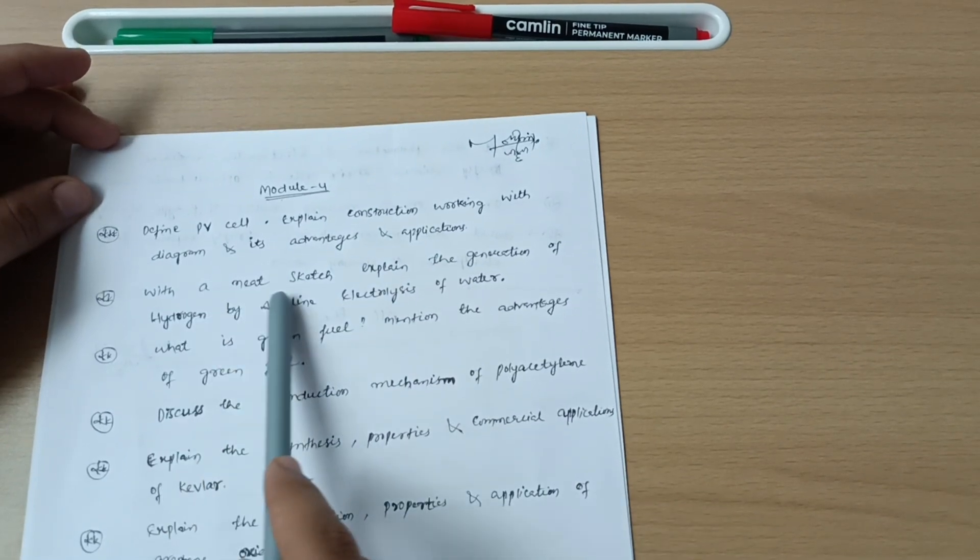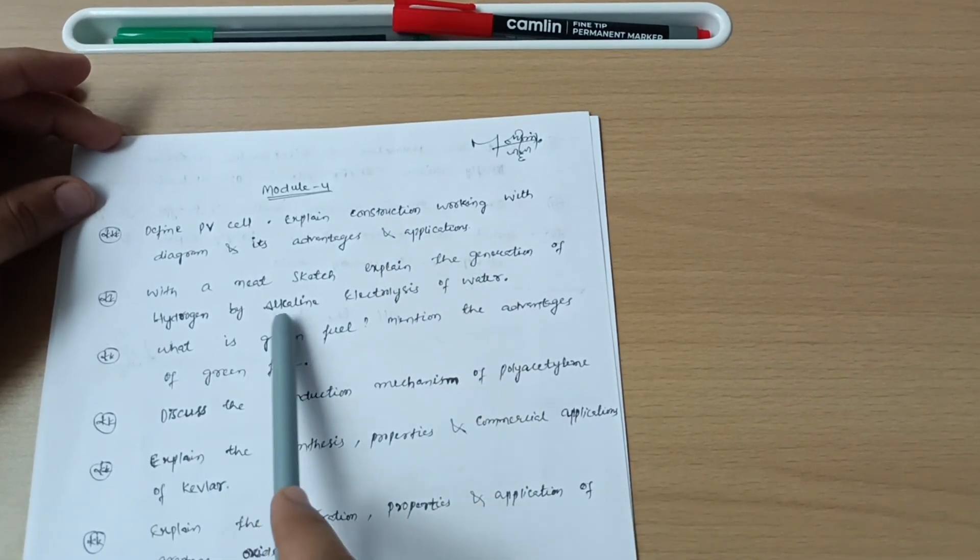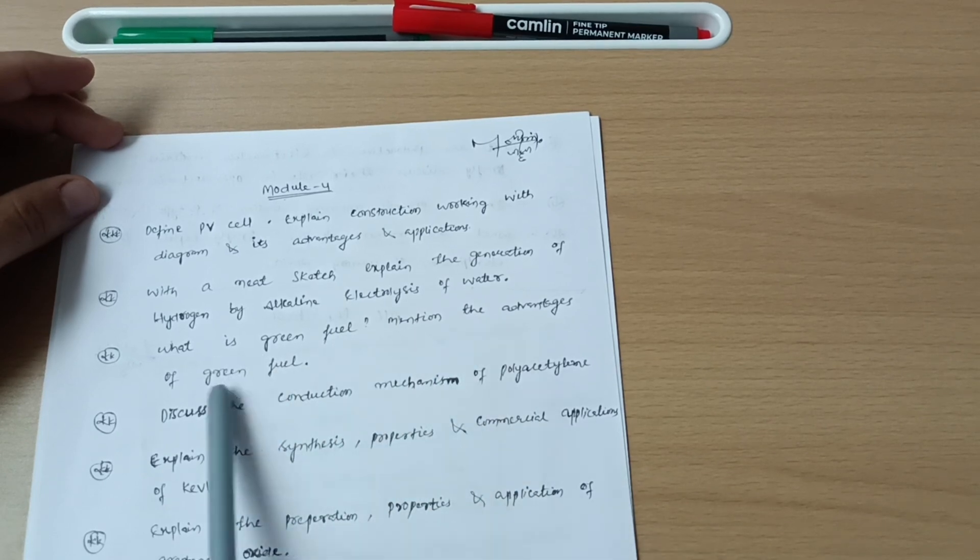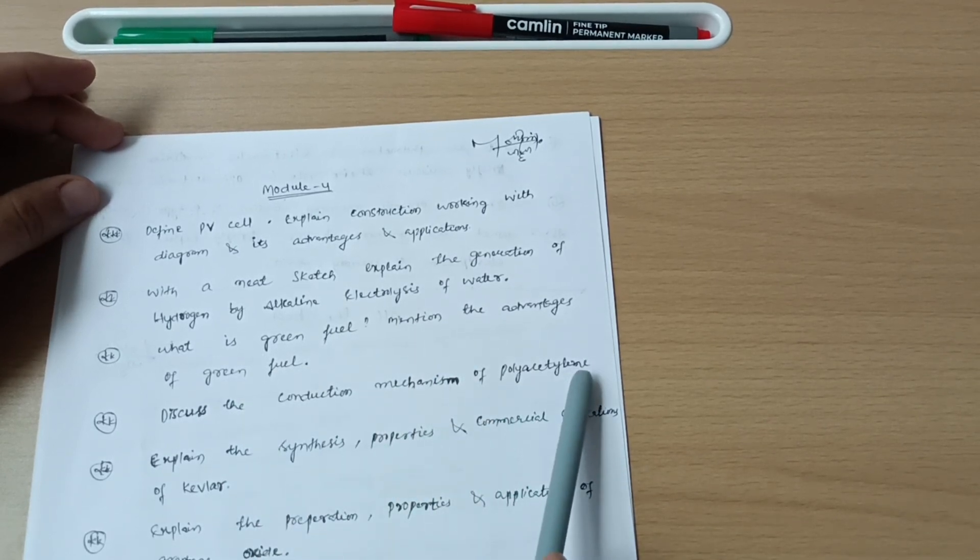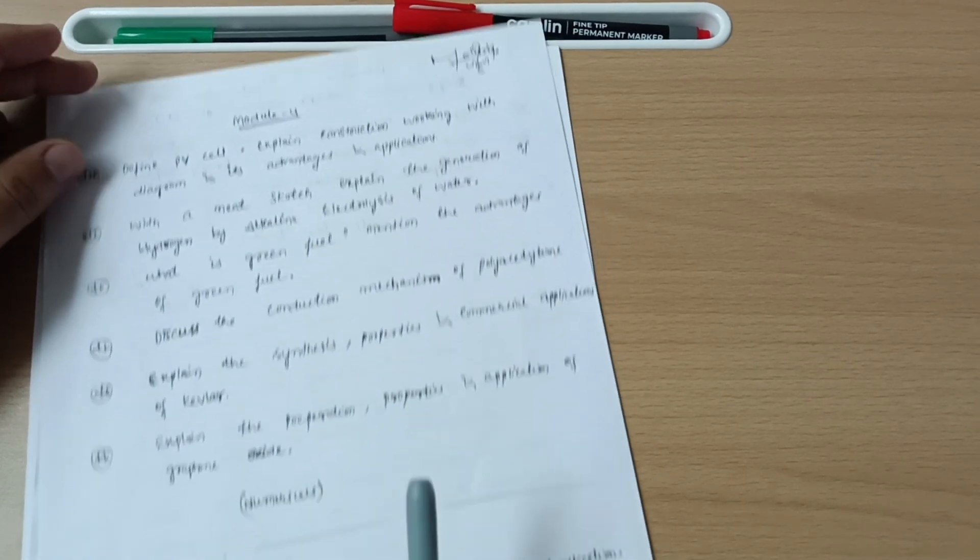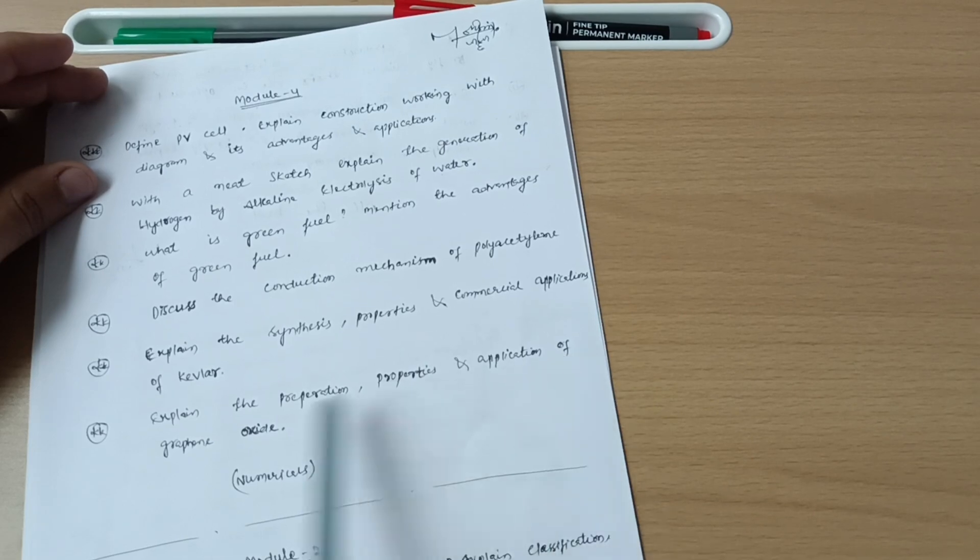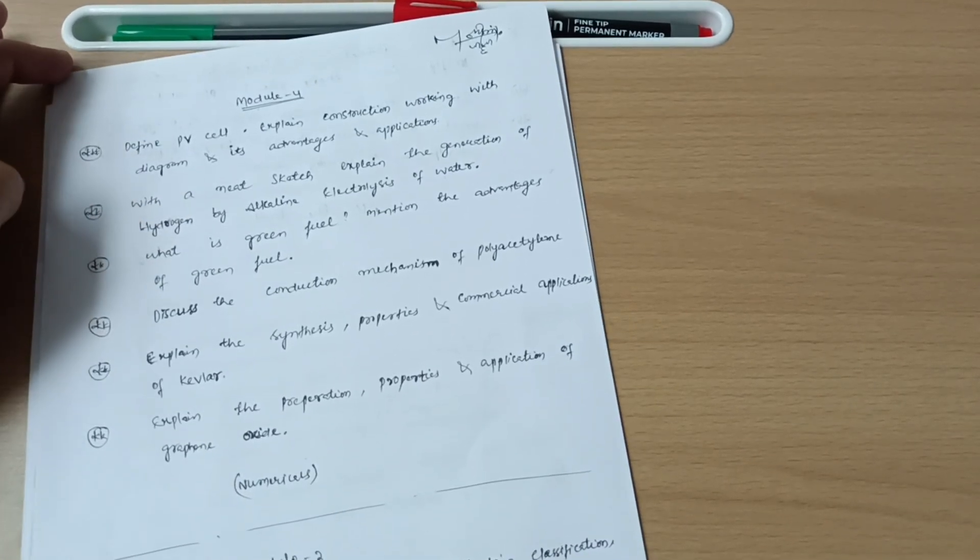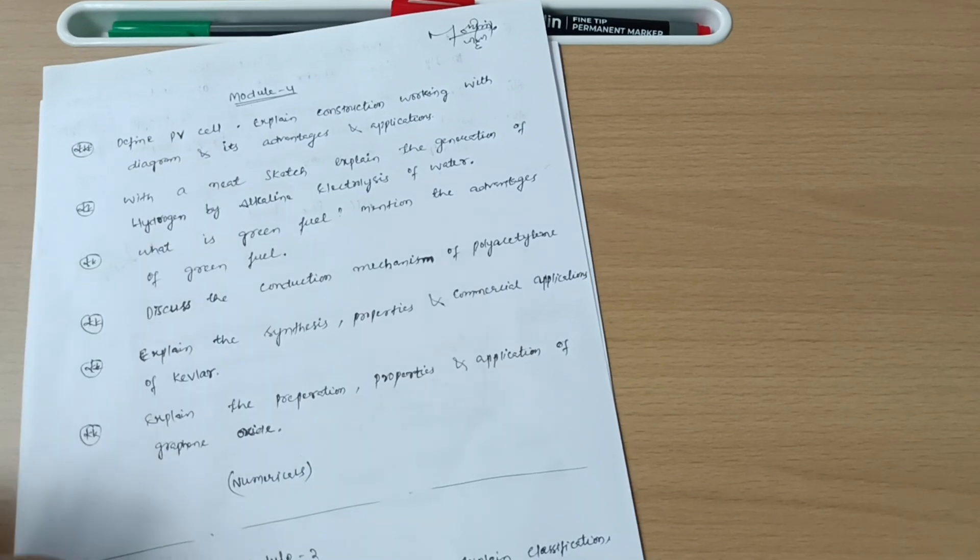With a neat sketch explain the generation of hydrogen by alkaline electrolysis of water. What is green fuel? Mention the advantages of green fuel. Discuss the conduction mechanism of polyacetylene. Explain the synthesis, properties, and commercial applications of Kevlar. Explain the preparation, properties, and application of graphene oxide. These are the six questions which you have to cover from module four. If you are convenient then definitely you have to go for the numericals also.